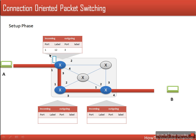So incoming port here, as you can see, is 1, outgoing port is 3. And it has assigned an available incoming label — we have taken a random number, let's say 12. Now this router will forward this packet on port number 3.